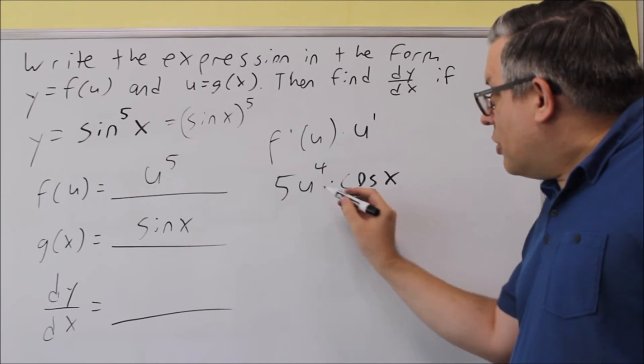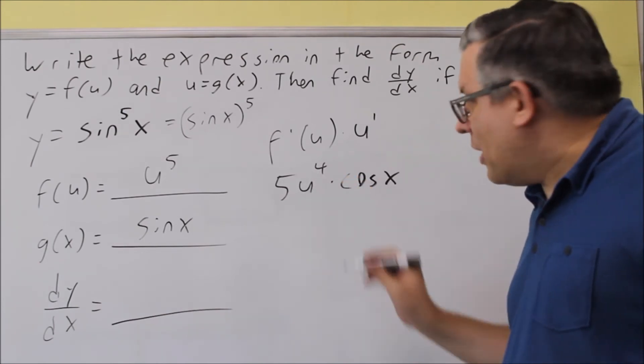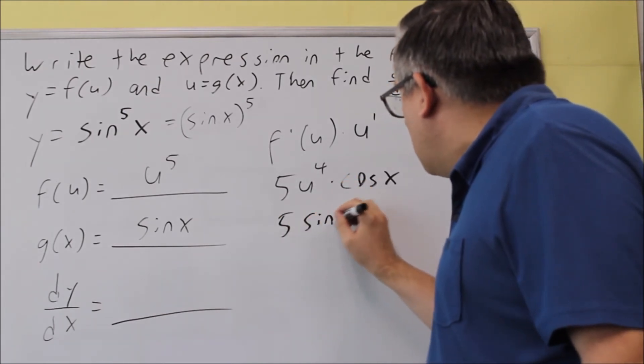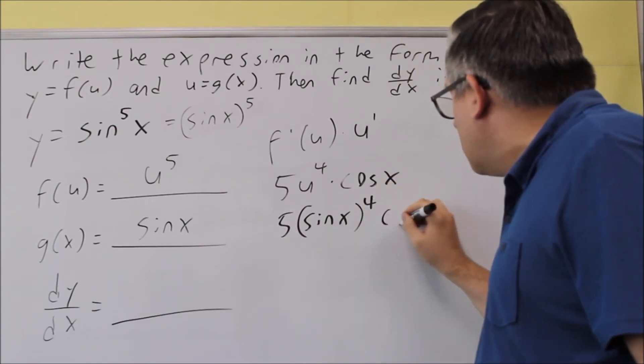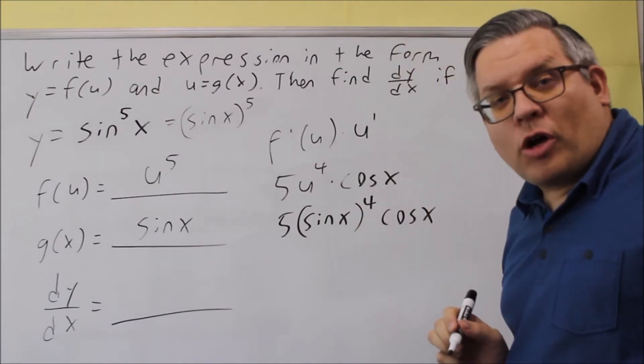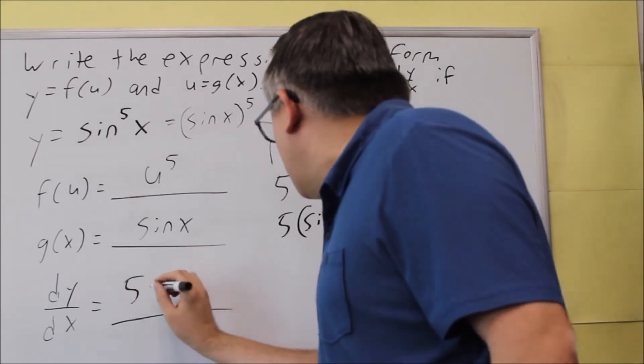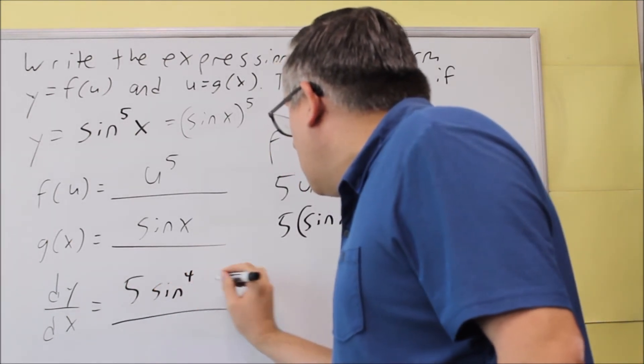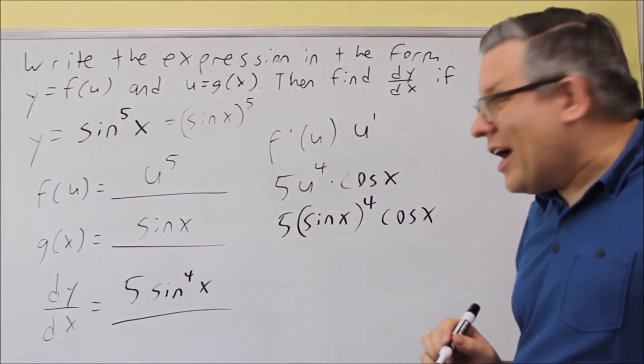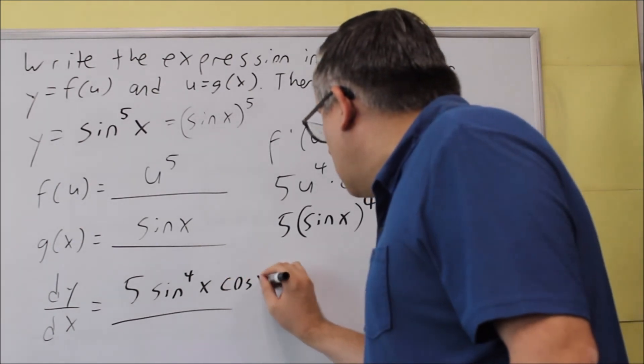Now the last thing we have to do is put the sine back in. So you could, if you want, go ahead and leave your answer in this form. Or you can also just write it out like that, sine to the fourth X and then cosine X.